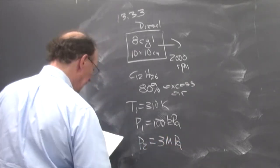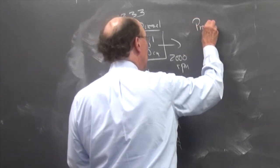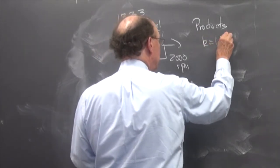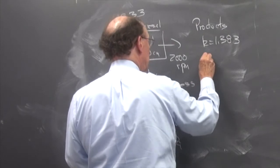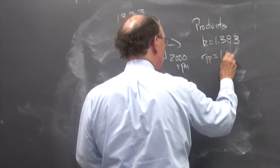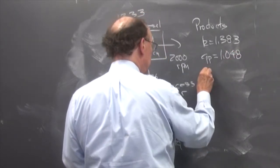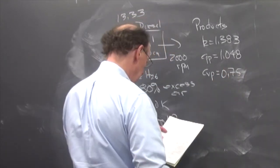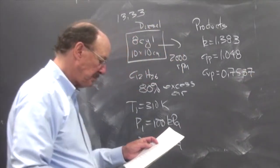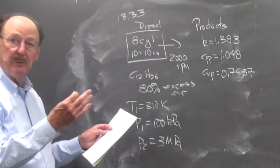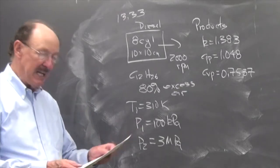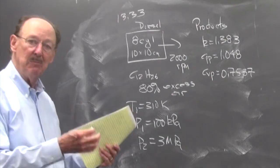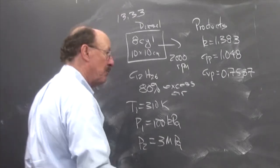And for the products, we're going to use the k is 1.383, C sub P of the products is equal to 0.7537. And so now we're going to go through the cycle analysis, go through and find the state points, the fuel-air ratio, go around and find everything possible. And so this will be a complete example that you can use as a reference for other problems.